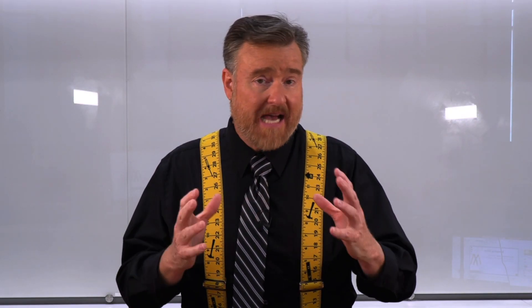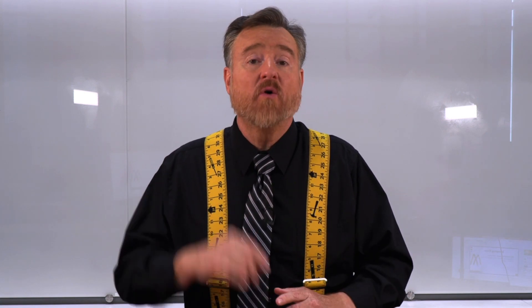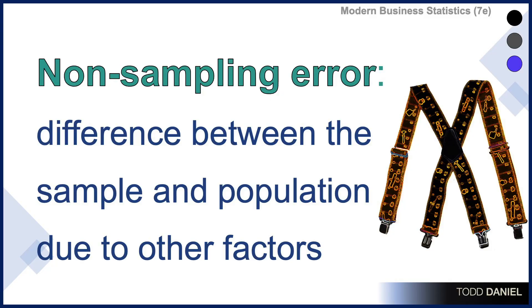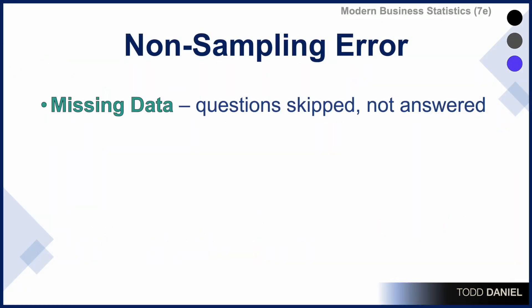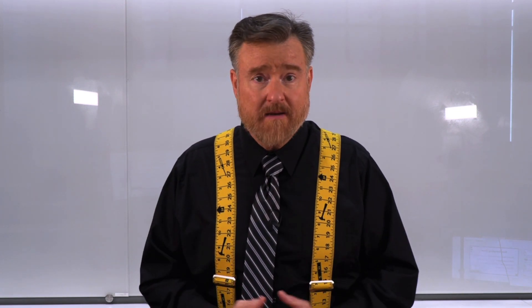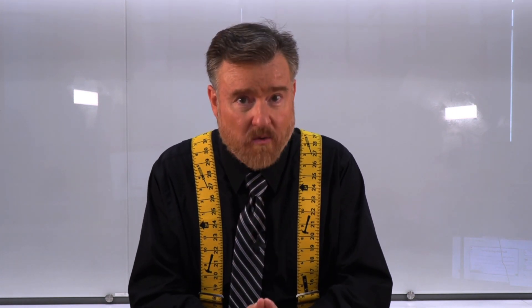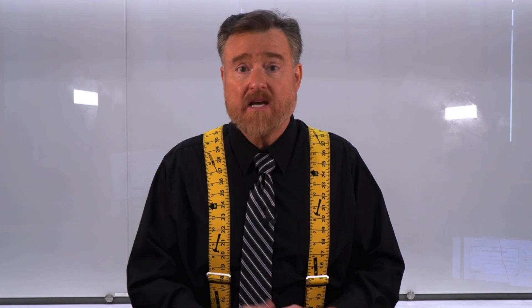Increasing our sample size is an excellent way of making sure that we are measuring accurately and minimizing error. There is also non-sampling error. Non-sampling error is the difference between the sample and the population due to other factors, such as squishy measurements or missing data. It is possible that we have non-sampling error because certain individuals skipped questions on our survey. The fact that that information is missing doesn't mean that we can simply ignore it. Sometimes the most important information is the information we are not being given — that may be the information we most want to know. Missing data requires knowing why those data points are missing and then having some methodology to deal with the missing data.